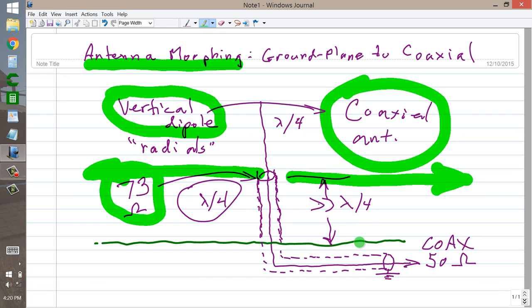So that's the low down, the up high, and the sort of middle altitude evaluation of antenna morphing ground plane to coaxial.